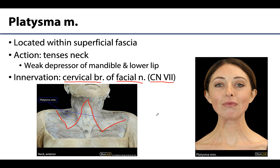The fibers of the platysma muscle will blend with muscle fibers of the other facial muscles superiorly, as well as with fibers of the deltoid and pectoralis major inferiorly. The main action of the platysma muscle is to tense the neck — think about tensing your neck while shaving. That tensing action happens with contraction of the platysma muscle.